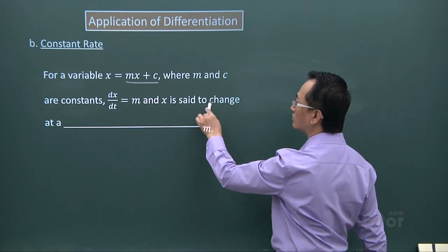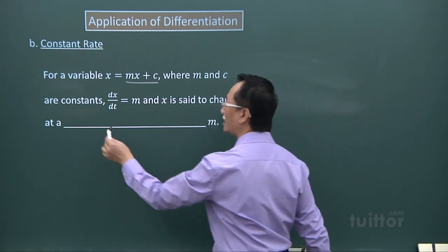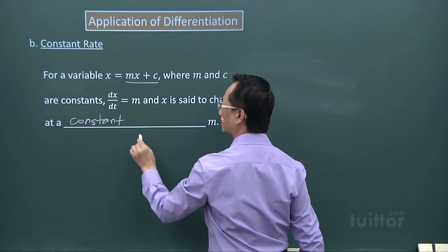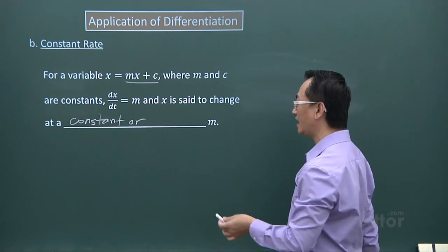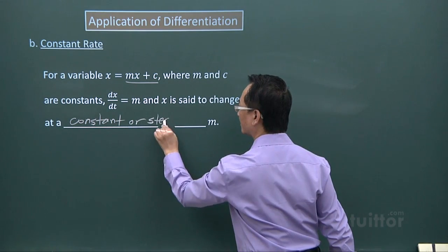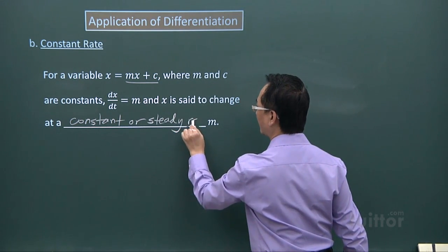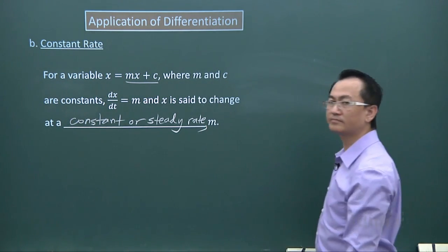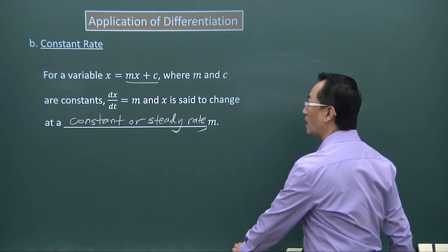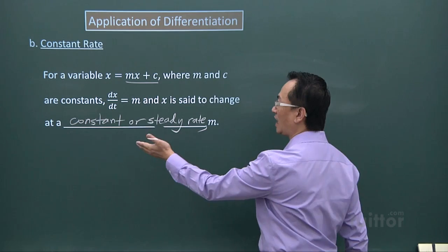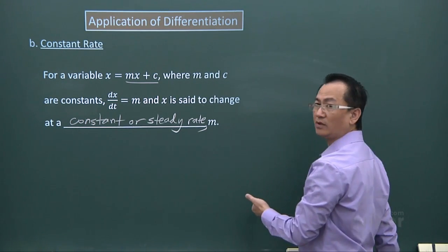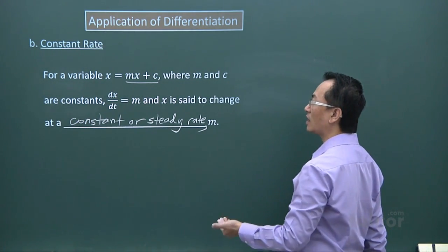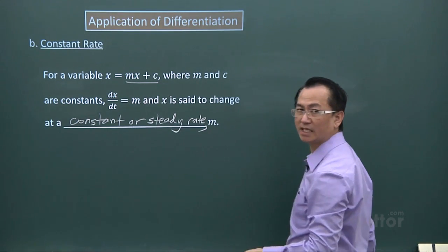Now x is said to change at a constant, or another word for constant is steady, rate. And the rate is m. So you can be sure if it's going to be a constant or steady rate of change, that expression you'll work from has to be a linear form.